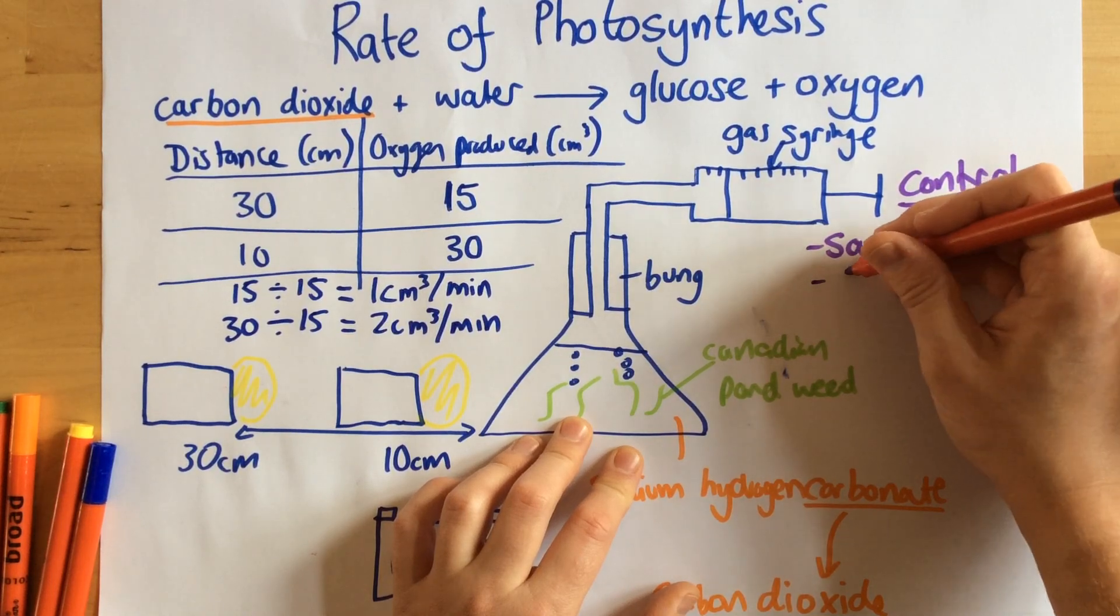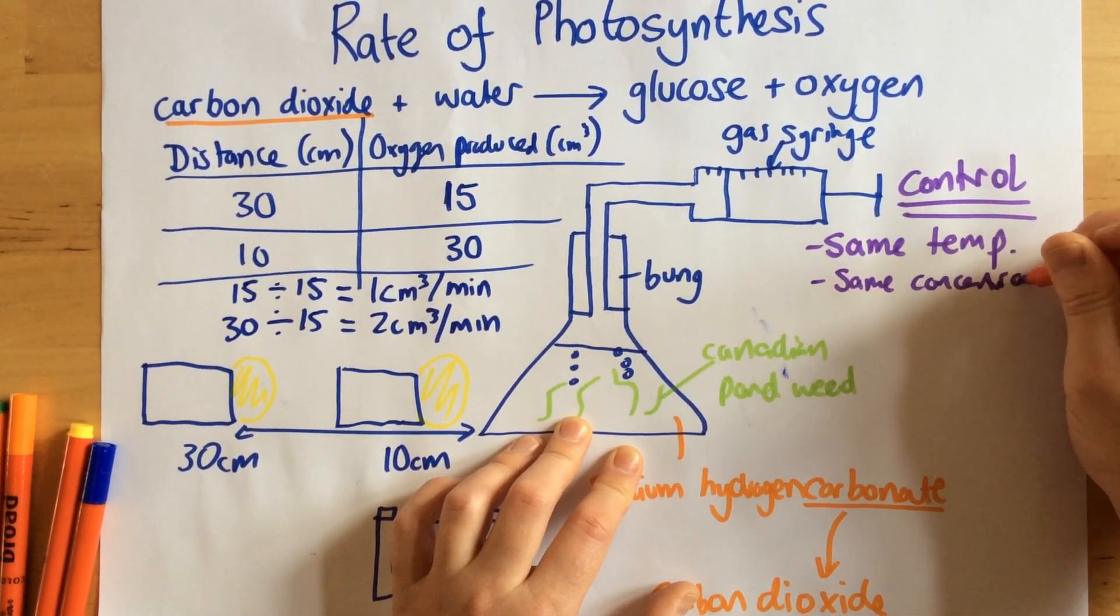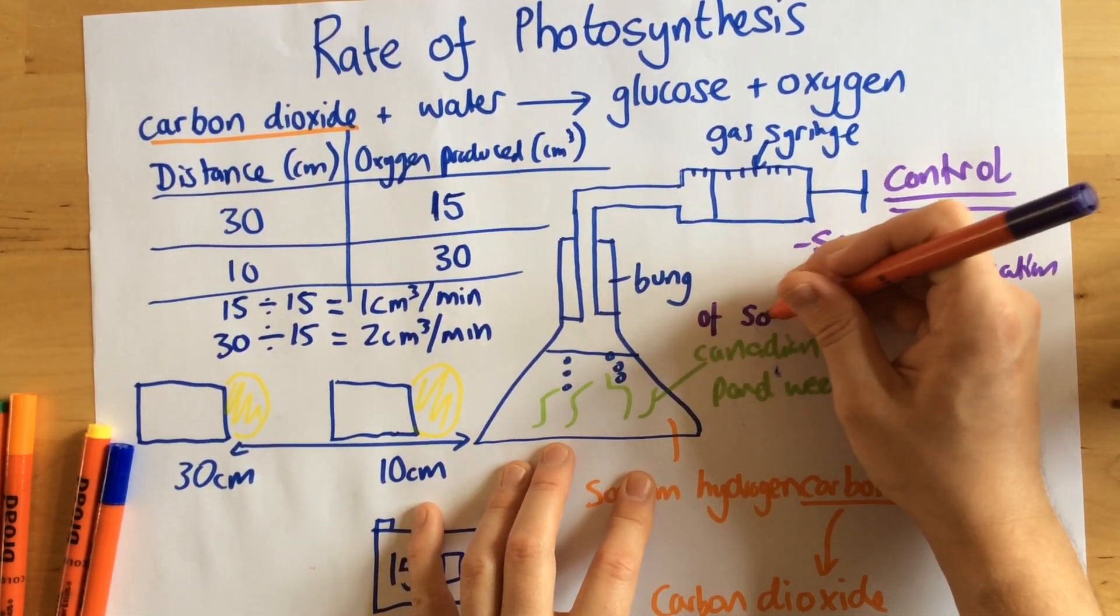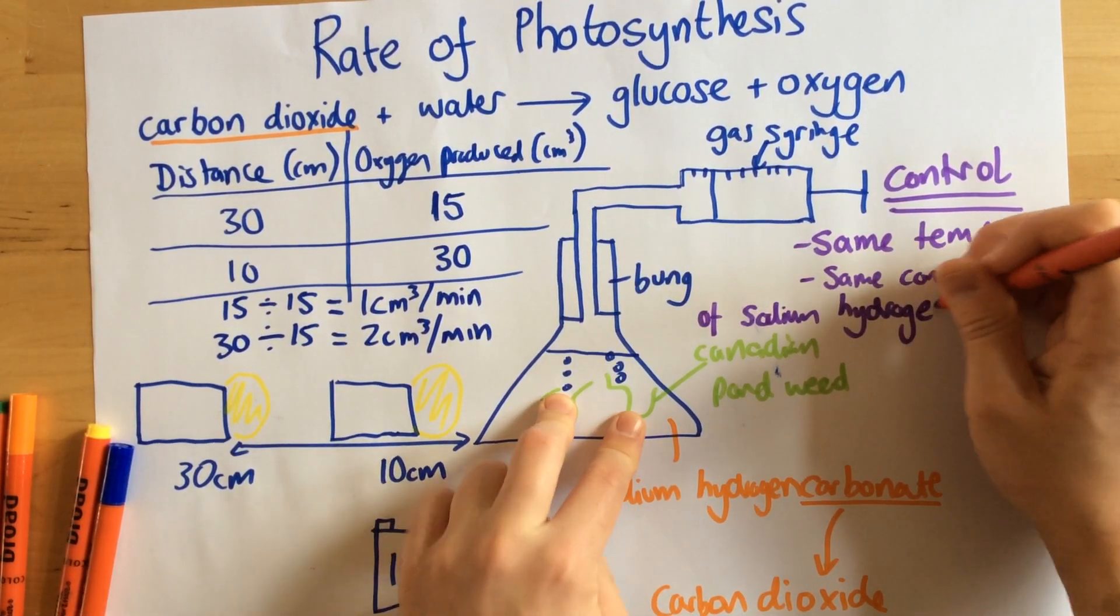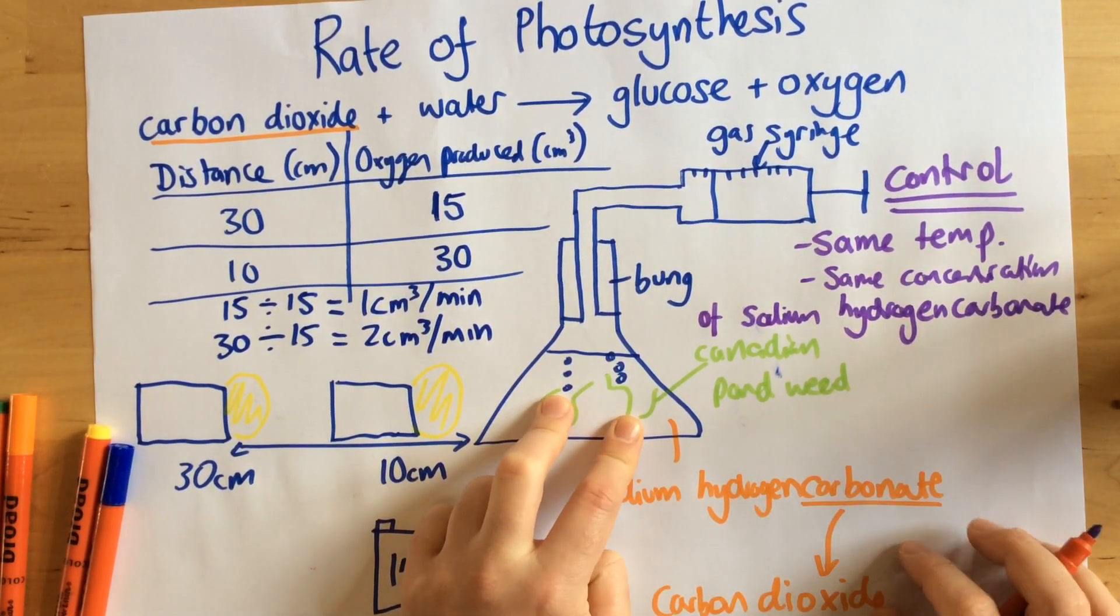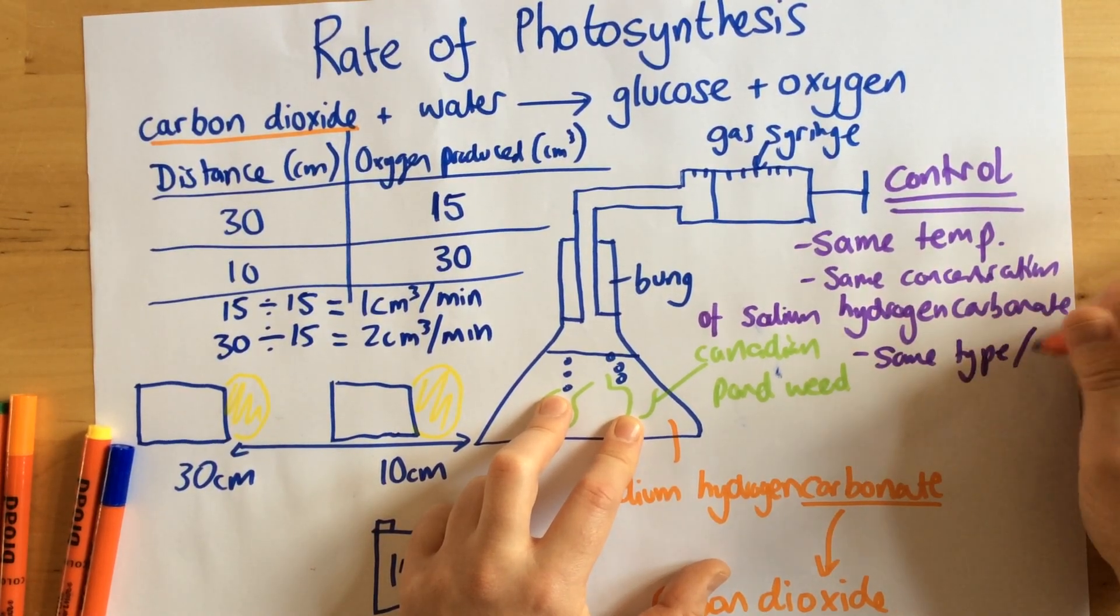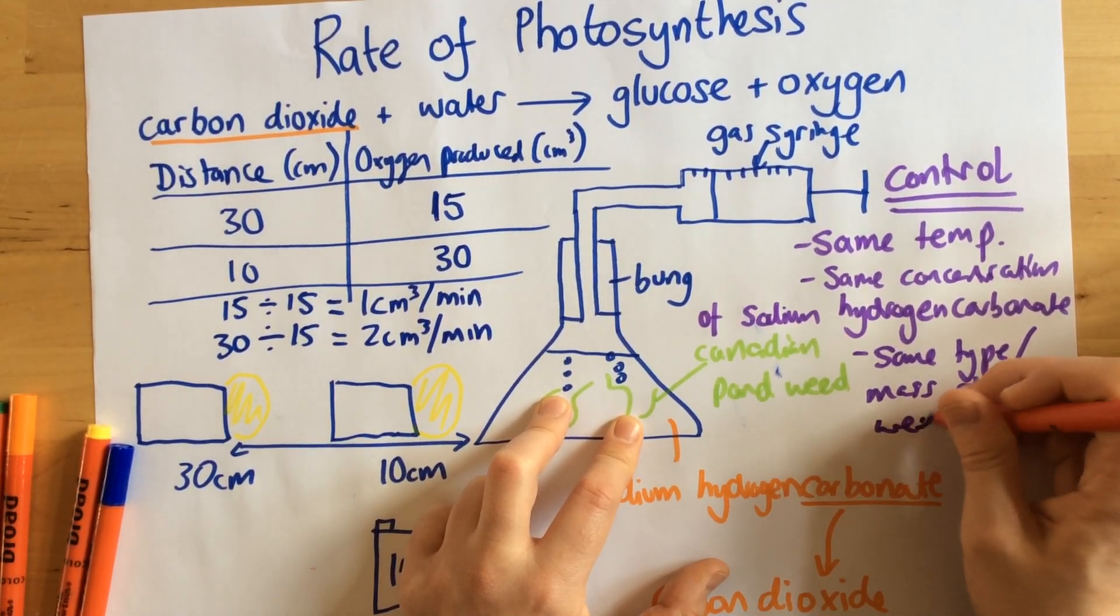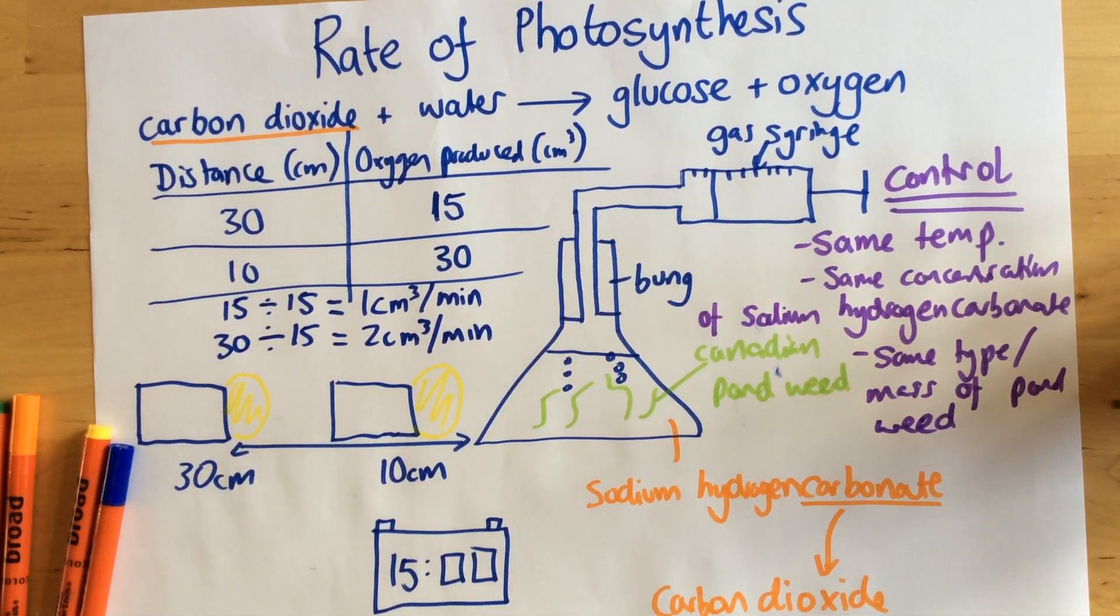What we also need is the same concentration of this thing here, because we want the same amount of carbon dioxide available to the pondweed. And finally, another really important one is the same type and mass of pondweed as well. Because obviously, if we had loads more pondweed, we'd produce even more oxygen and it wouldn't be a fair test.